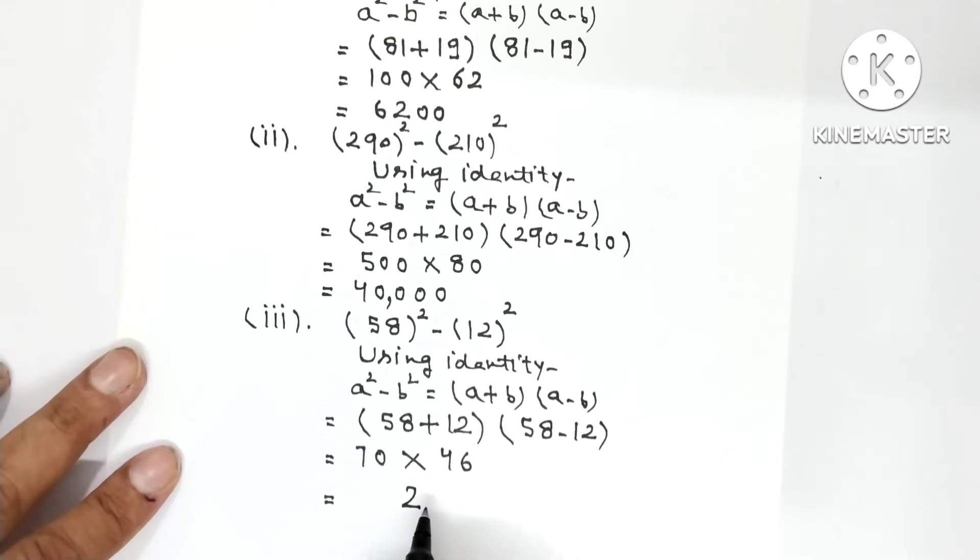Now multiply: 7, 6 are 42, 4 is carry. 7, 4s are 28 and 4, 32 and 1, 0. So the answer is 3220.